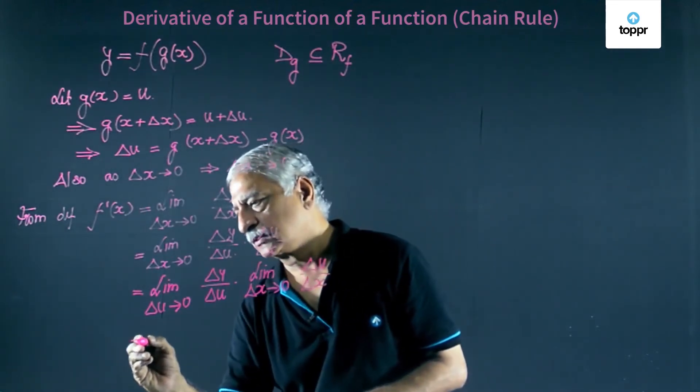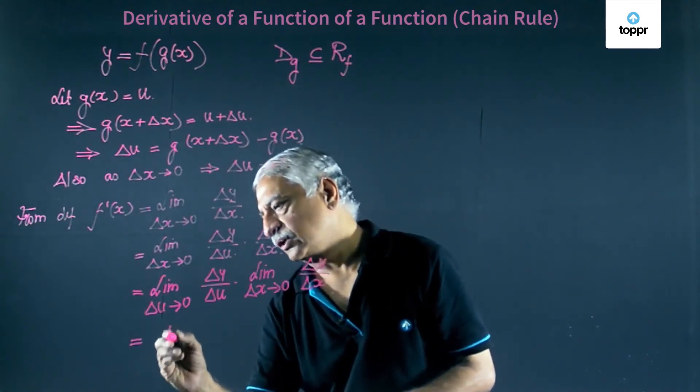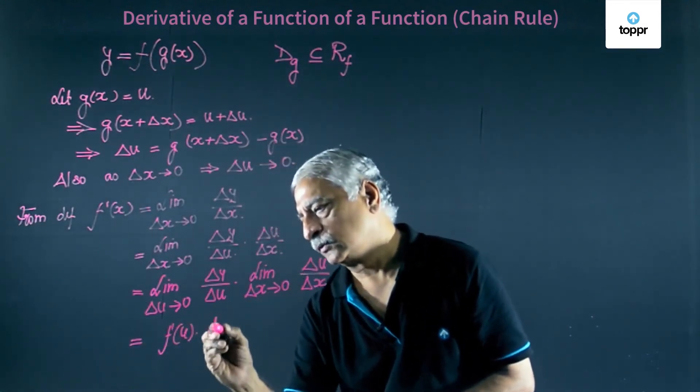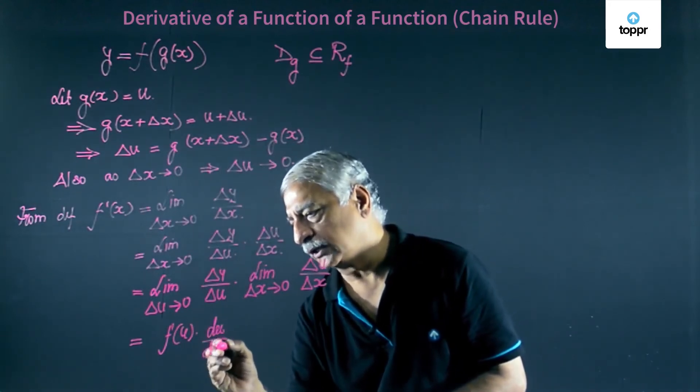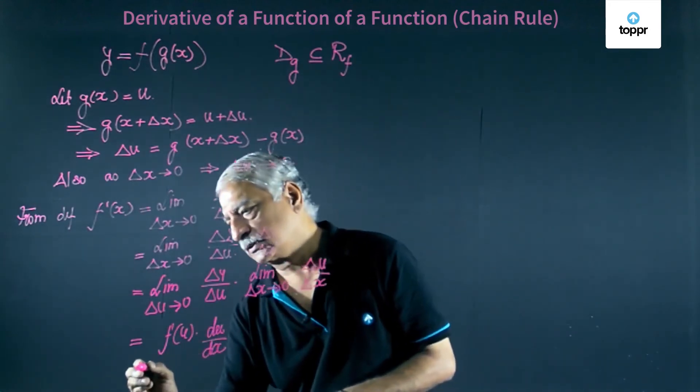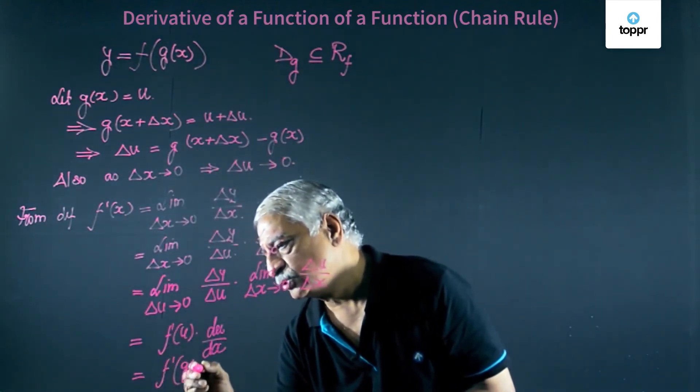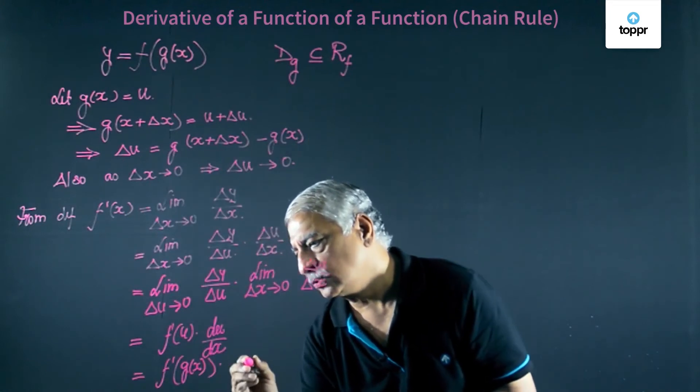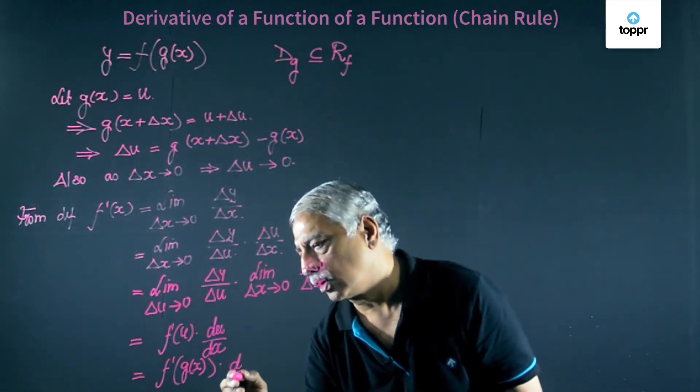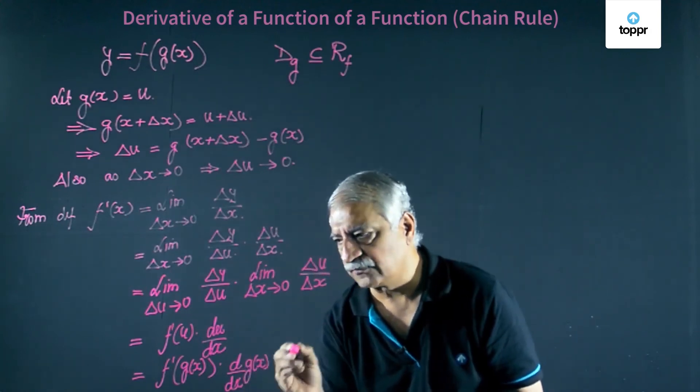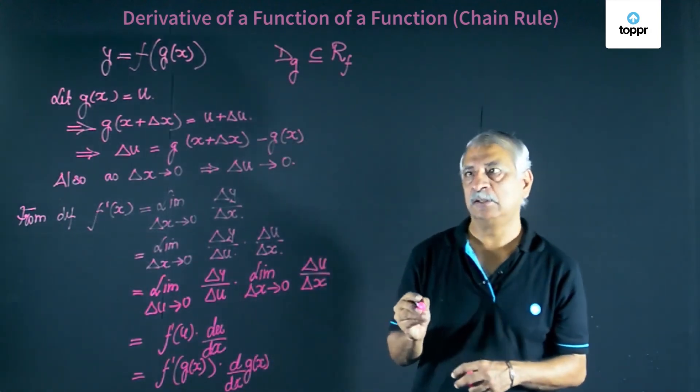This is equal to f dash u into du dx. I can write this as f dash of g of x into derivative of g of x. This is defined as the chain rule.